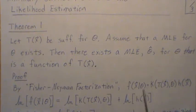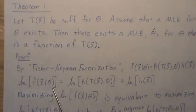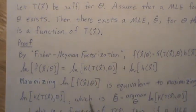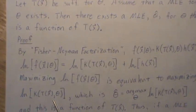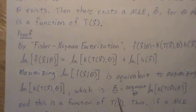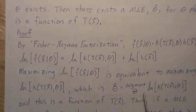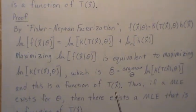Taking the log of both sides, maximizing the log of the likelihood is equivalent to maximizing the log of the function K. The argmax of theta of the log of K gives us theta-hat, and this is a function of our statistic T.